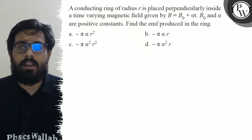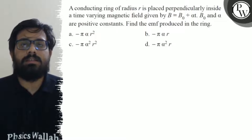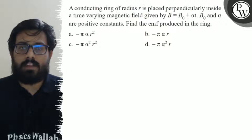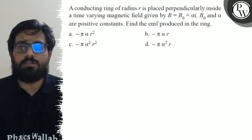Your first option is minus π·α·r², second option is minus π·α·r, third option is minus π·α²·r², and fourth option is minus π·α²·r.